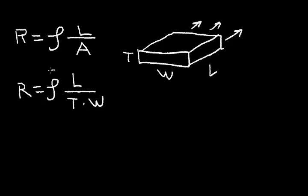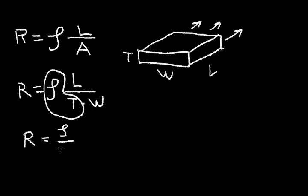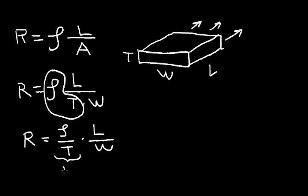The resistance is equal to the resistivity of the material times the length in the direction of the current flow, divided by T times W, which is the cross-section that the current flows through. If I take the resistivity and the thickness, I can rewrite this as R equals resistivity divided by the thickness, times the length divided by the width. This term — the resistivity divided by the thickness of the material — is called the sheet resistance.